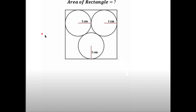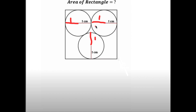In this video I'm going to be finding the area of this rectangle. What we are given are the radii of these three circles, and notice how all these radii are the same: one centimeter, one centimeter, and one centimeter. The diameter of each circle is two centimeters, since if the radius is one the diameter is two, meaning the other half is also one centimeter.